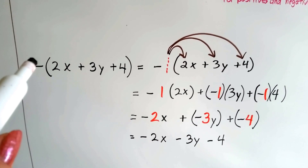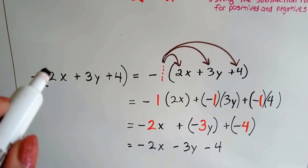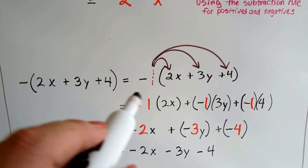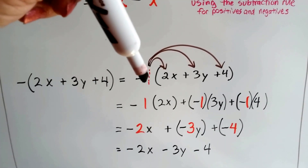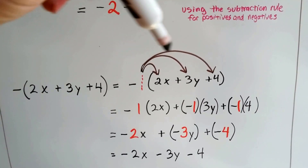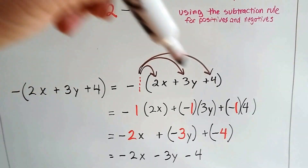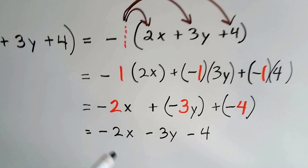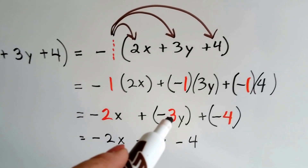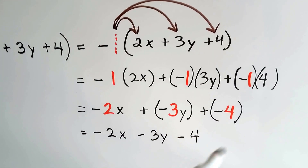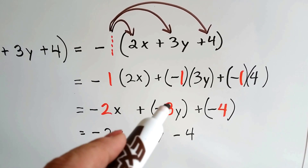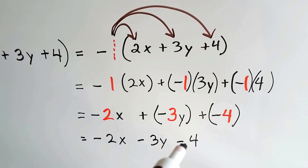Let's try this one. We've got a negative on the outside, so we know our invisible 1 is there: 2x plus 3y plus 4. We're going to distribute this negative 1 to all the terms inside the parentheses. That gives us — you can follow along on the second line — negative 1 times 2x, plus negative 1 times 3y, and negative 1 times 4. Negative 1 times 2x is negative 2x, plus negative 1 times 3y is negative 3y, plus negative 1 times 4 is negative 4. So when simplified, we get negative 2x minus 3y minus 4.